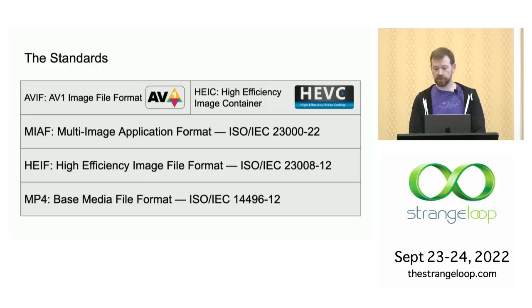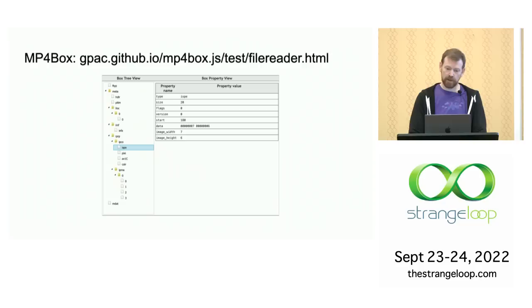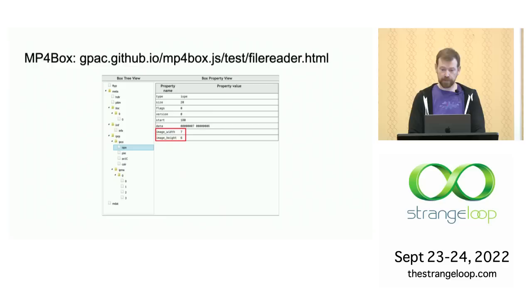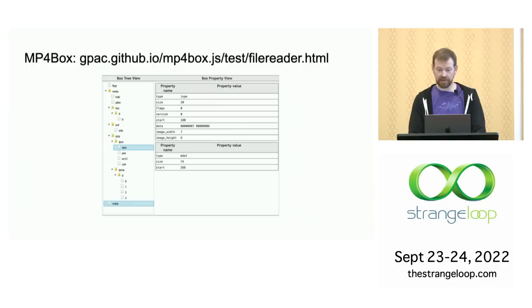Now let's see what our smiley example would look like in the AVIF container. This is a tool for inspecting MP4 containers. On the left you see the nestable boxes, and the right shows the contents of the selected box. Each box begins with a four-letter type and a size to make it easy for parsers to navigate. Just like our simple example, this box tells us the image dimensions. The compressed image data is contained in the MDAT box at the end. But from the container's perspective, all it knows is the size — interpreting its contents is the job of the codec.